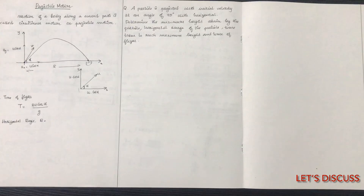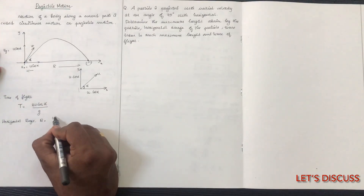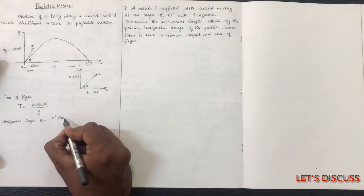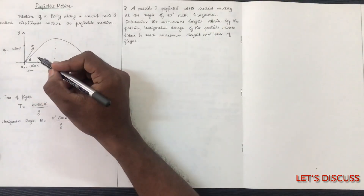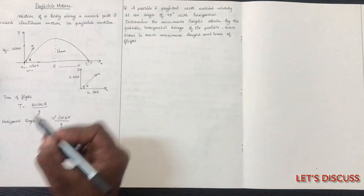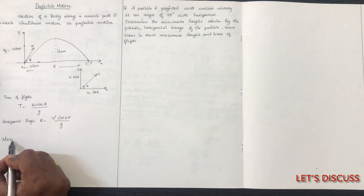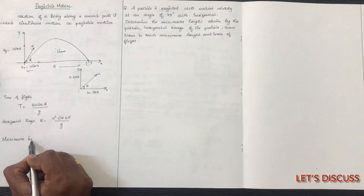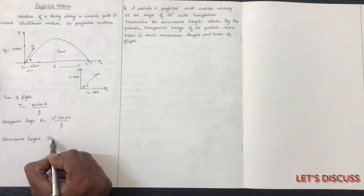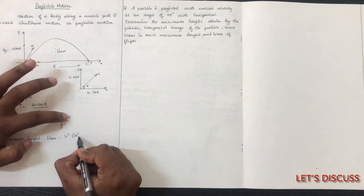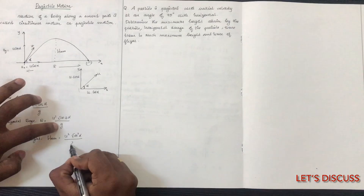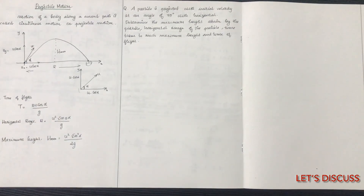We will use the formula: range R equals u squared sine 2 alpha divided by g. For maximum height, h max equals u squared sine squared 2 alpha divided by 2g. These are the key equations for projectile motion.